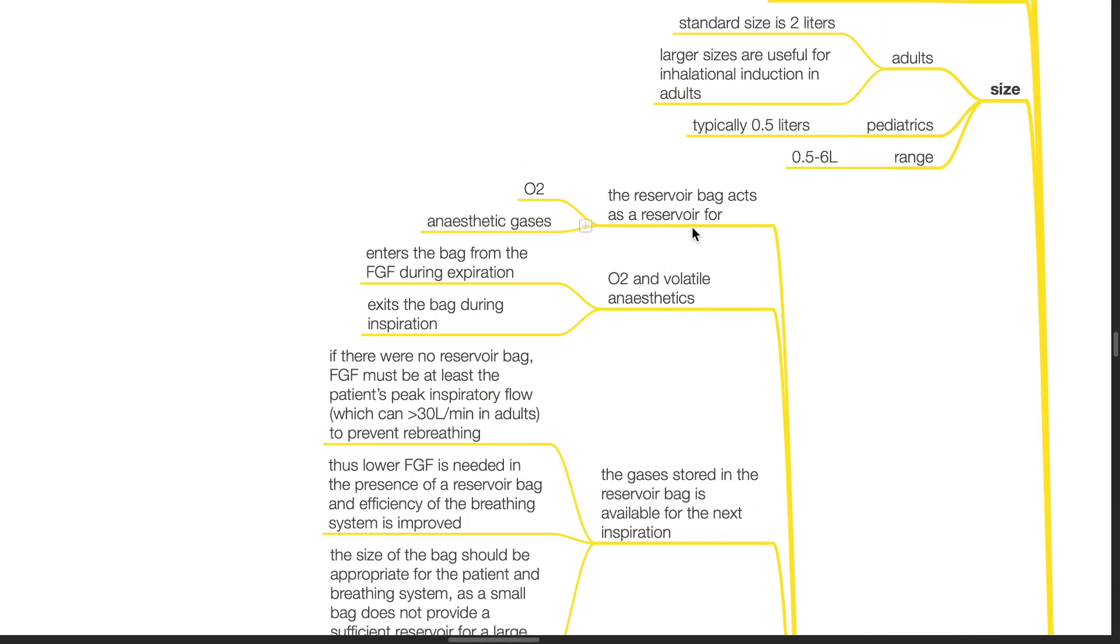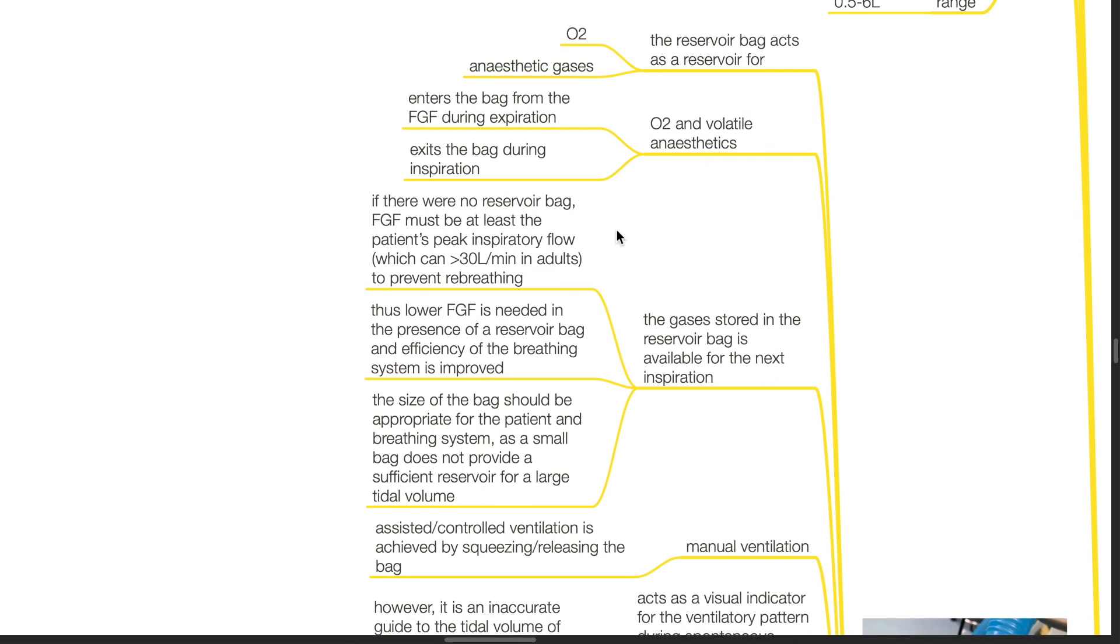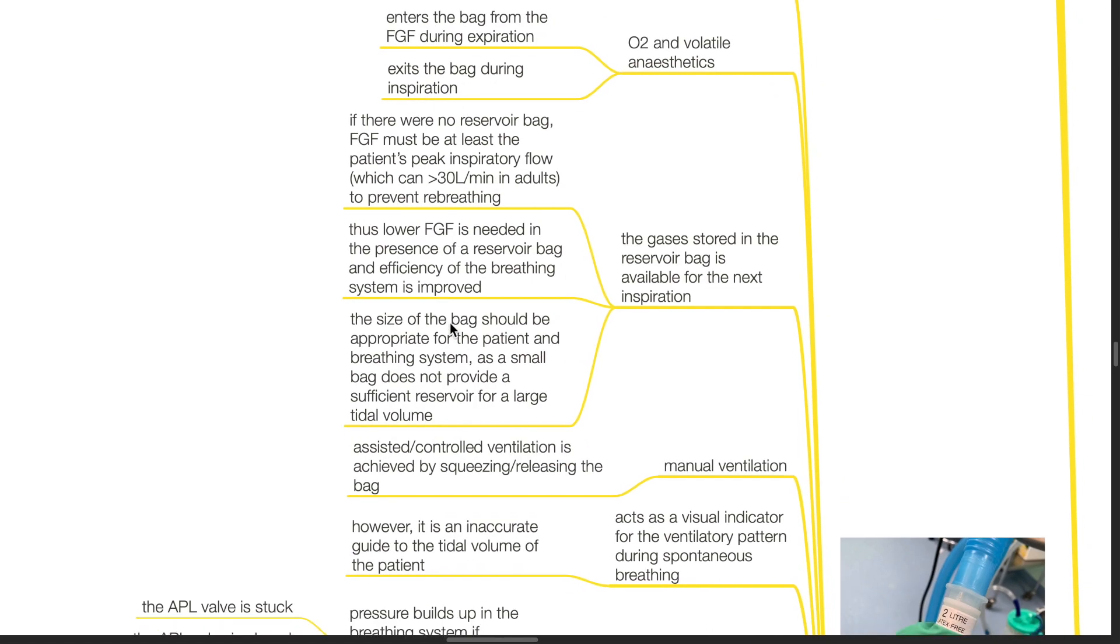Mechanism of action. The reservoir bag acts as a reservoir for oxygen and anesthetic gases. Oxygen and volatile anesthetics enter the bag from the fresh gas flow during expiration and exits the bag during inspiration. The gases stored in the reservoir bag is available for the next inspiration. If there were no reservoir bag, fresh gas flow must be at least the patient's peak inspiratory flow which can be more than 30 liters per minute in adults to prevent re-breathing. Thus, lower fresh gas flow is needed in the presence of a reservoir bag and efficiency of the breathing system is improved. The size of the bag should be appropriate for the patient and the breathing system as a small bag does not provide a sufficient reservoir for a large tidal volume.